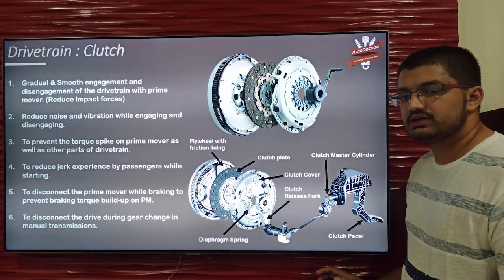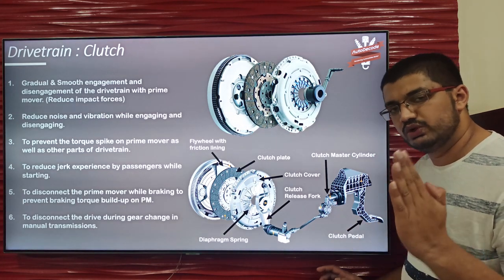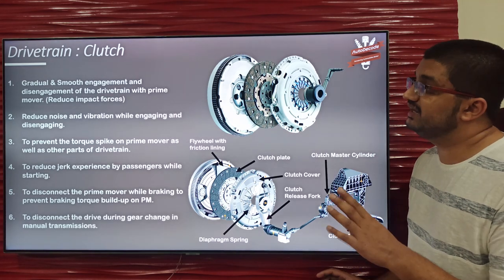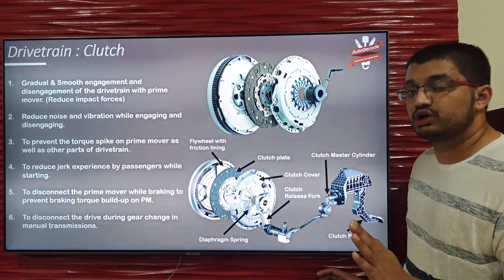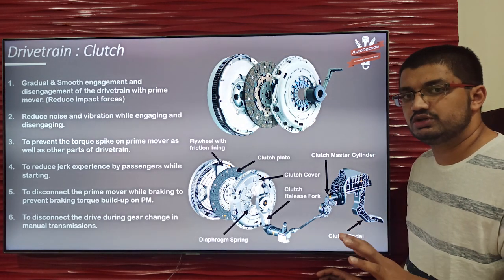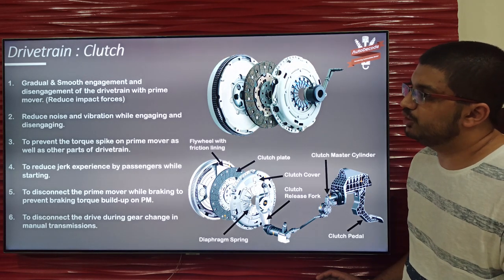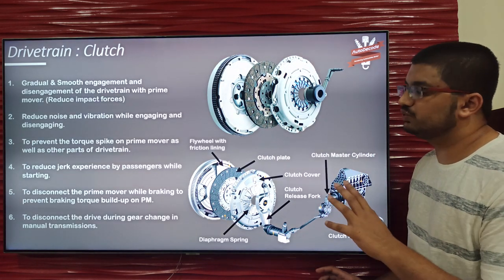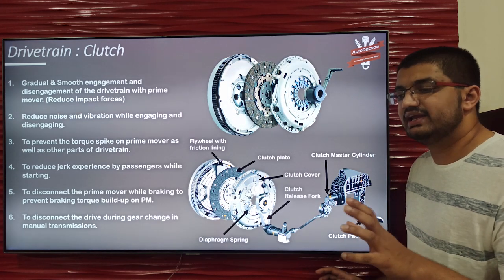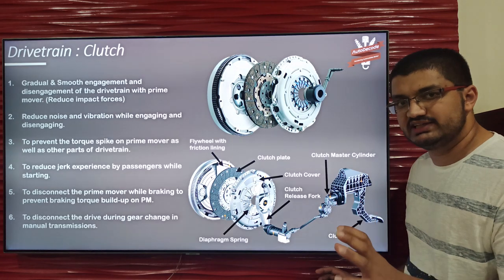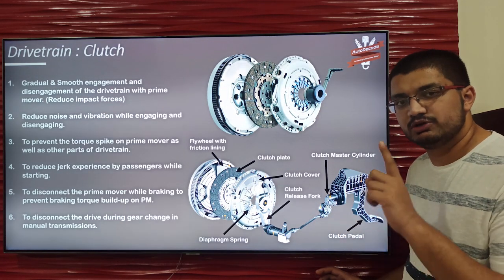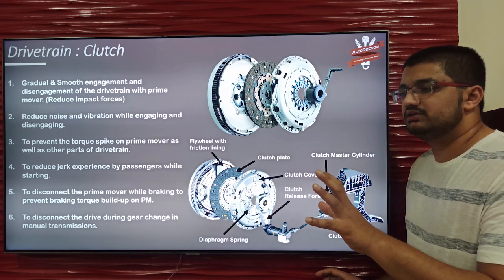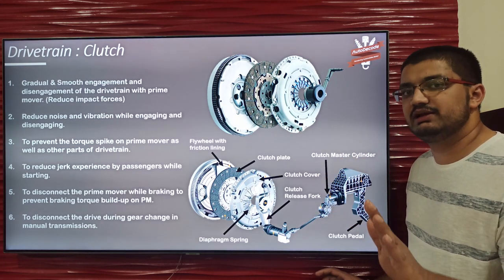The clutch enables engagement and disengagement of the prime mover shaft with the remaining drivetrain, and while doing this, another function is making the engagement and disengagement gradual and smooth — we are talking about a friction clutch. The engagement and disengagement has to be gradual and smooth, which also reduces noise and vibration. As friction increases with normal force (f = μN), the engagement is gradual and noise and vibration are eliminated.